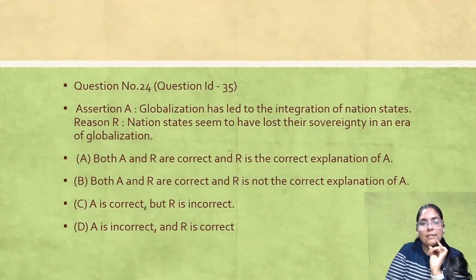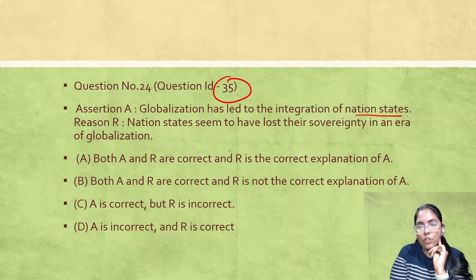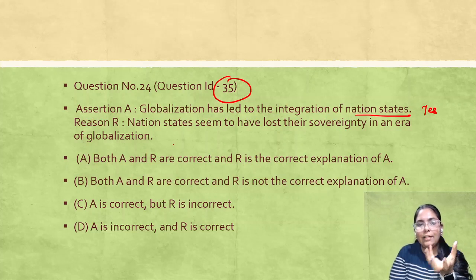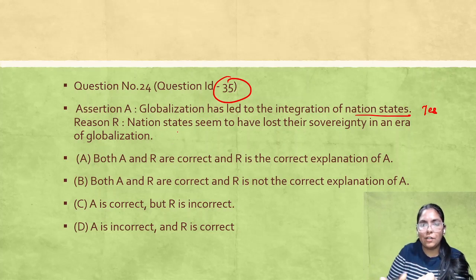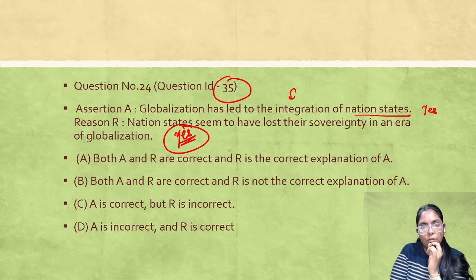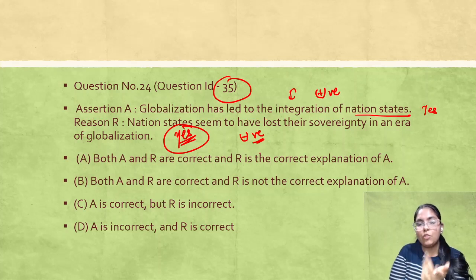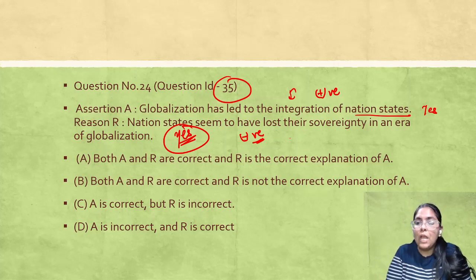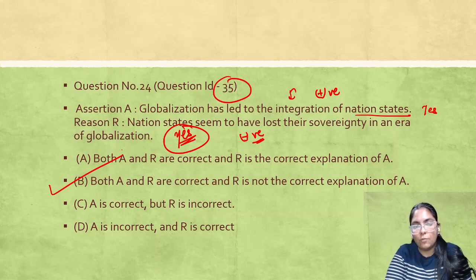Question ID 35: Globalization has led to integration of nation states — and nation states seem to have lost their sovereignty in an era of globalization. Integration of nation states is positive; losing sovereignty is negative. There is no direct relationship between these two statements. This is an assertion-reason type question. Free classes on Unacademy explain how to solve these. The subjects are completely opposite to each other, so the correct answer is option B.